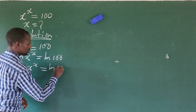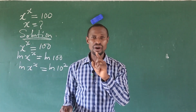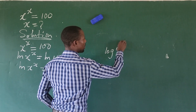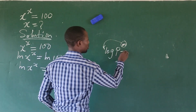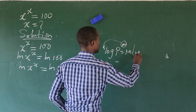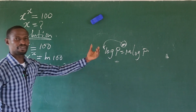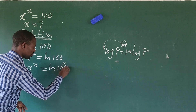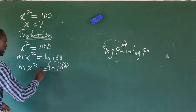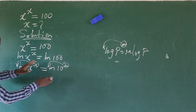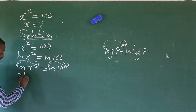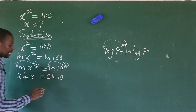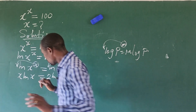Now, recalling the law of logarithms, which says that if you have log of P to the power of M, you move this exponent backward to give M times log of P. Looking at both sides, we have that resemblance, so we move the exponents backward on both sides. Rewriting both sides, we get x times LN of x equal to 2 times LN of 10.